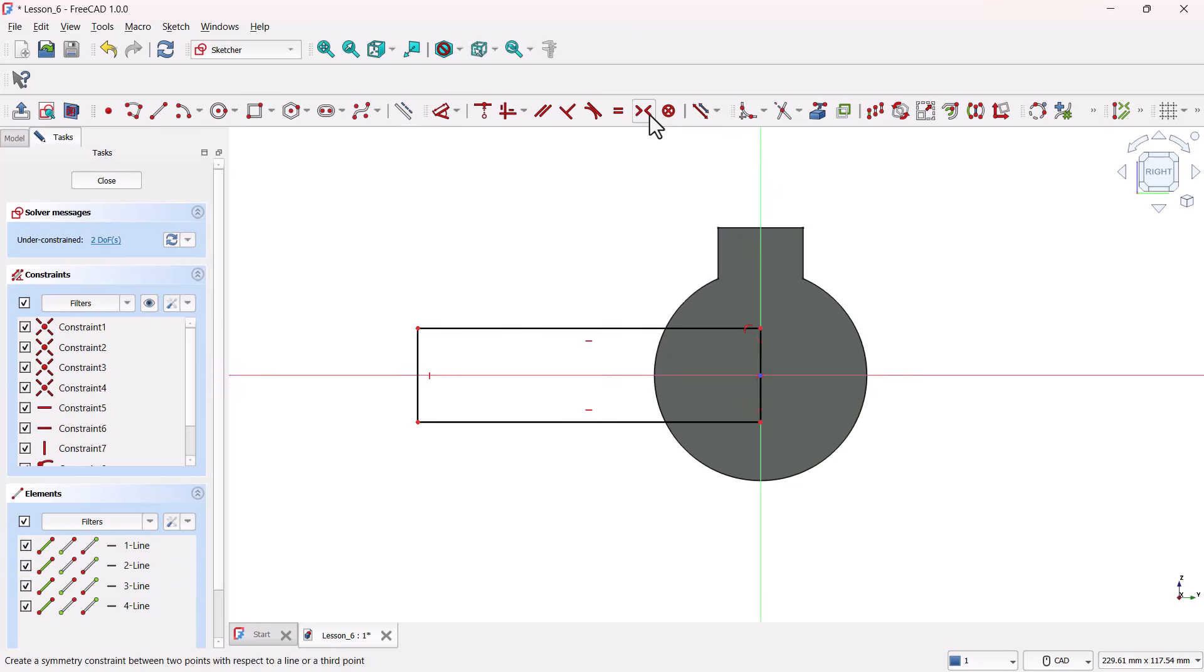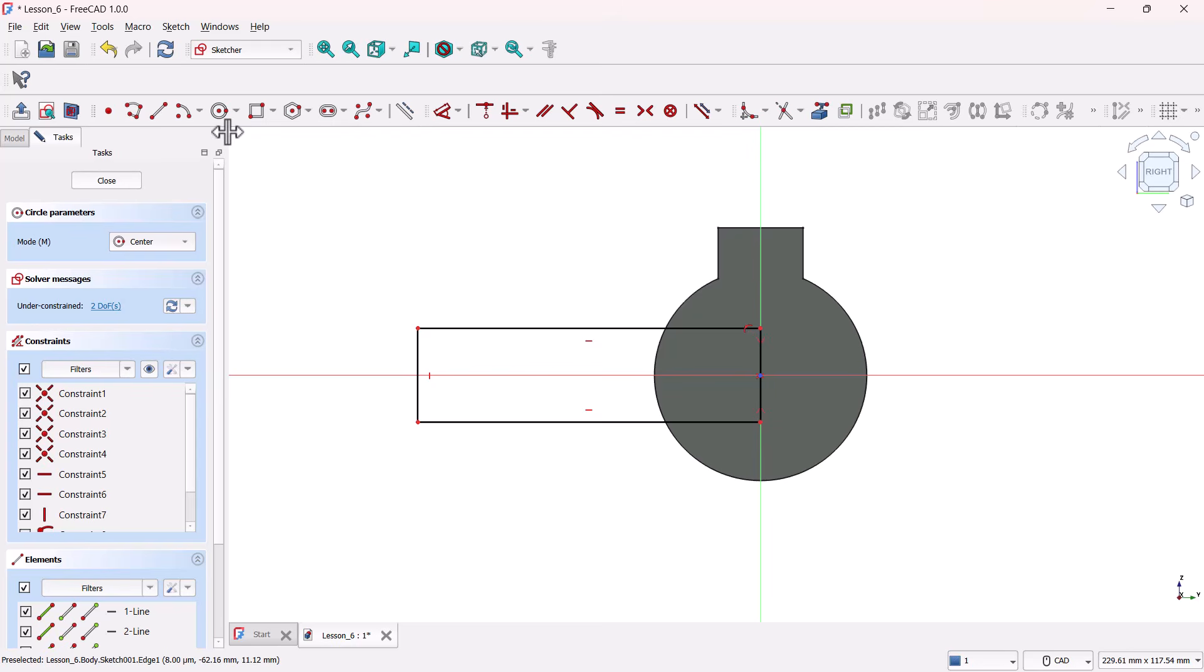Now, grab the Circle tool and snap the center to this intersection point. Drag the circle out. Make sure it's touching the rectangle's edge.